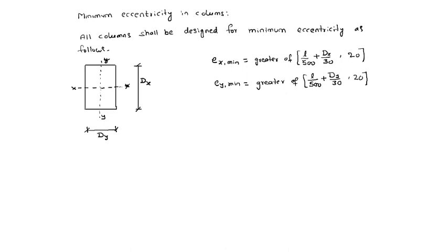Where L is the unsupported length of the column. Unsupported length means slab to slab. Suppose this is a slab like this.